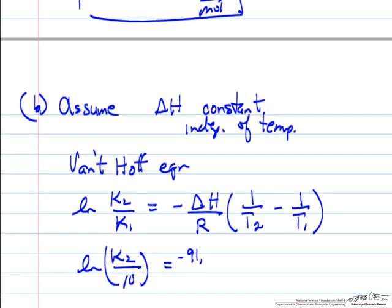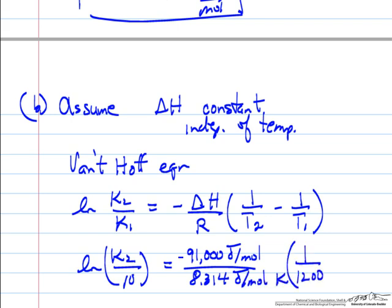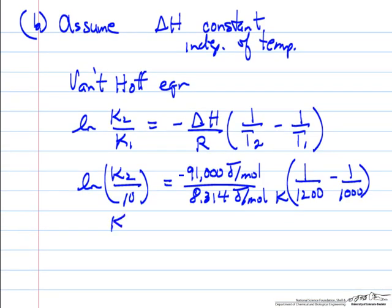So that's 91,000 joules per mole. The gas constant, again, 8.314 joules per mole Kelvin. We want the value at 1200, and the equilibrium constant of 10, we know at 1000. So we can solve this equation for K2.